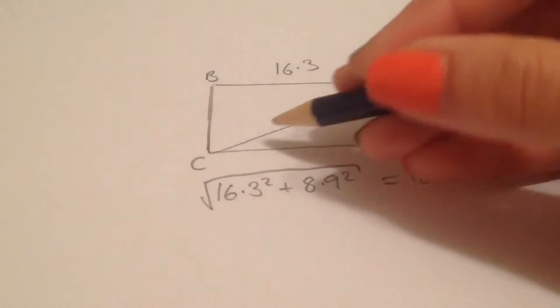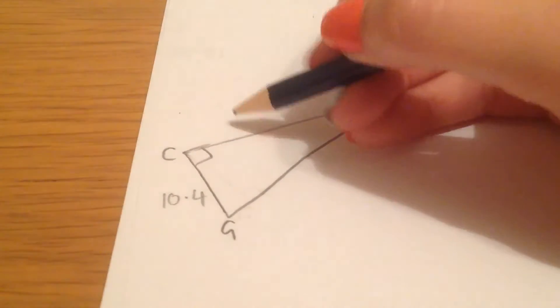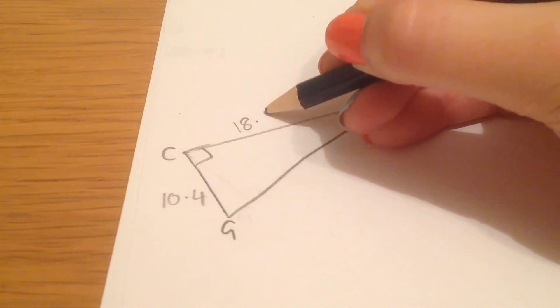And remember, what we've just found is we've found AC. Going back to my original sketch, we can now label AC with 18.57.